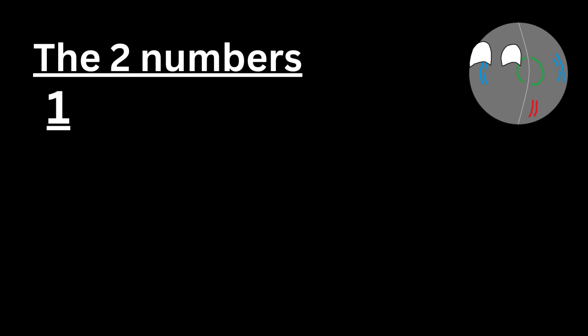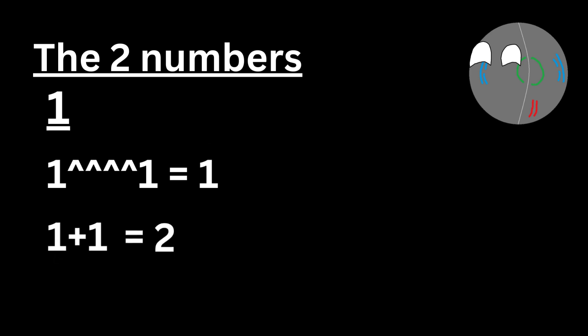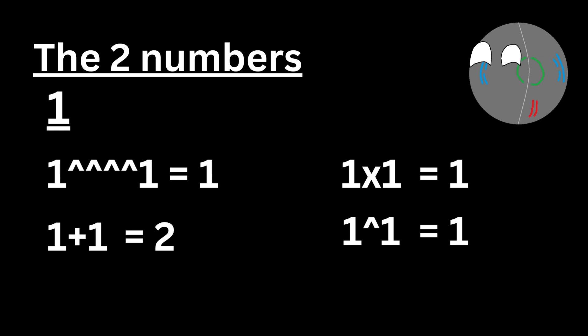Those two numbers are 1 and 2. The number 1 has a singular, non-plural value, so many things behave differently with it. For example, 1 hexated to 1 equals 1, because only one number is repeated at each higher level, leaving only the base. So 1 times 1 = 1, 1 to the power of 1 = 1, and 1 hexated to 1 = 1. The only exceptions are 1 plus 1 = 2 and the succession of 1, which also equals 2.